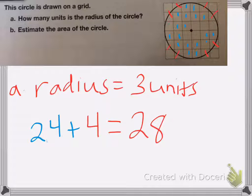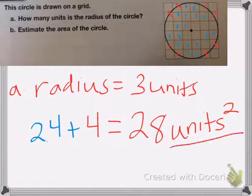Now remember with units and with area, we need to square the label. So my answer is about 28 square units is the area of my circle.